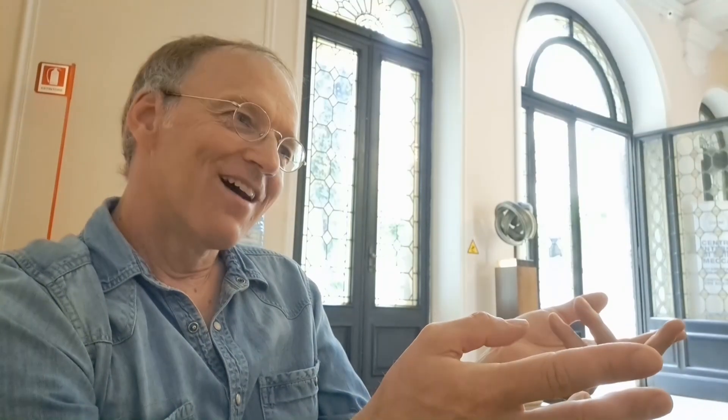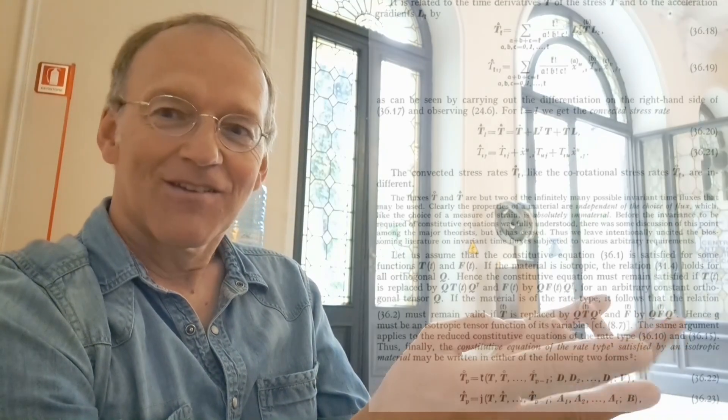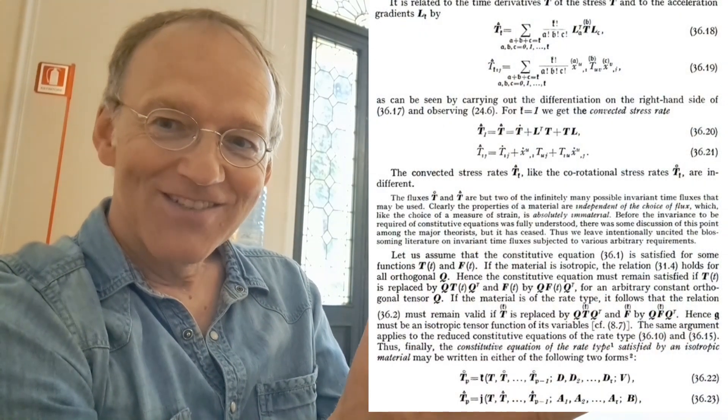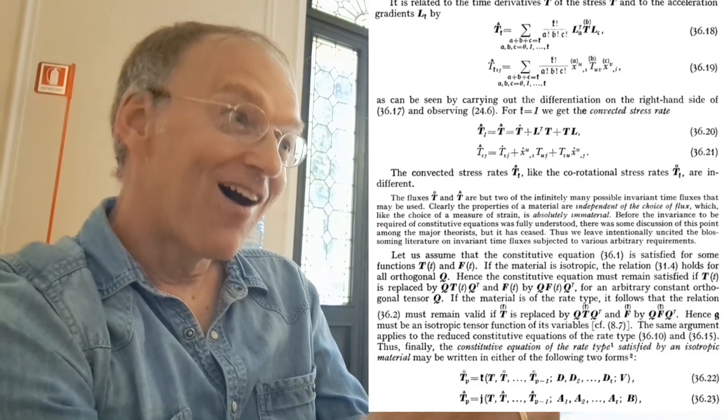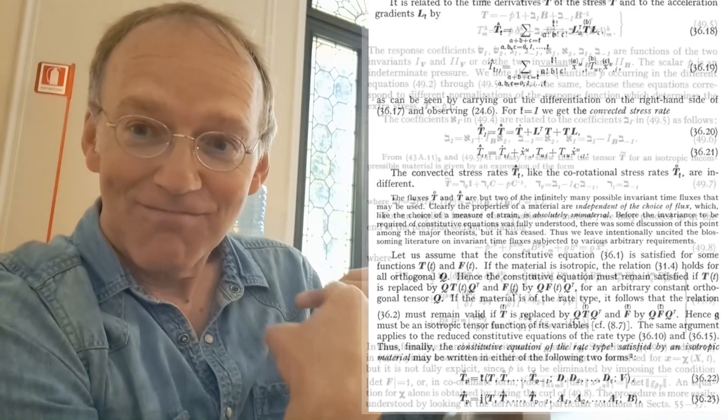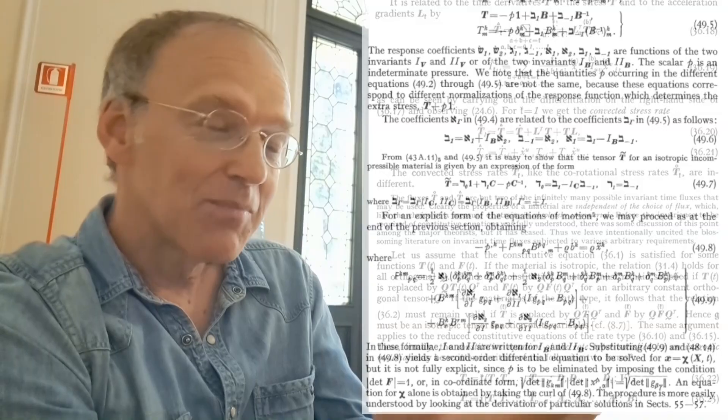But not only that. Once large language models are capable of reading and understanding scientific text — and we already have evidence this is the case — you could give them a volume of, say, Truesdell or Rivlin, which is almost unreadable, at least for people like me. I'll show you some of the pages here.